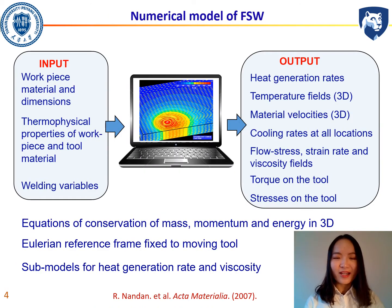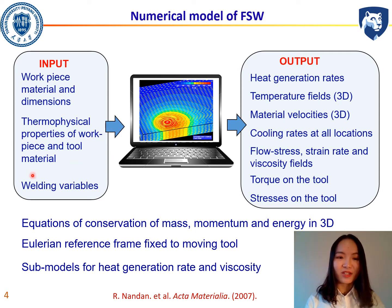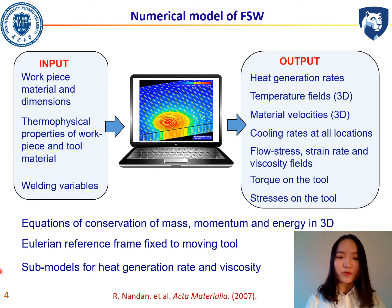The core engine of this work is the numerical model of friction stir welding. It combines the work piece material and dimensions, physical properties of the work pieces and tool material, and the welding process parameters. It is built based on the conservation equations of mass, momentum, and energy in 3D. Sub-models of heat transfer, heat generation rate, and viscosity are all involved in this model.